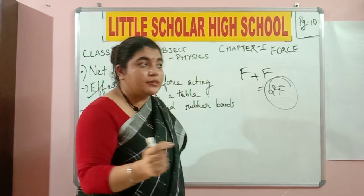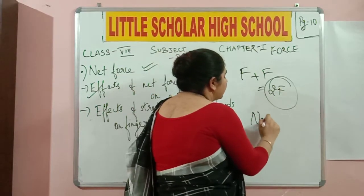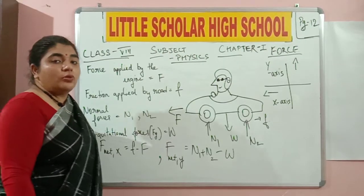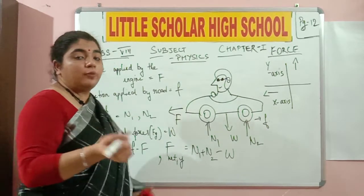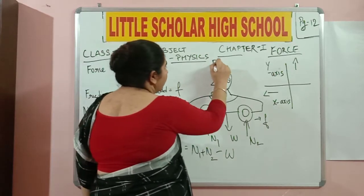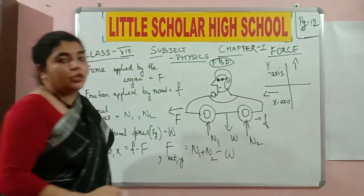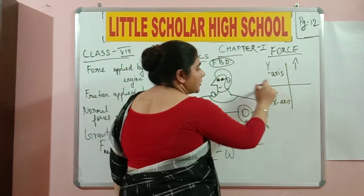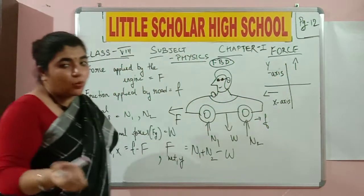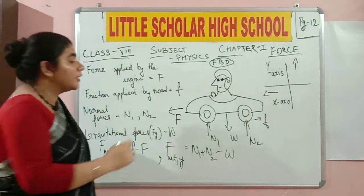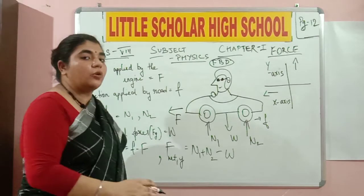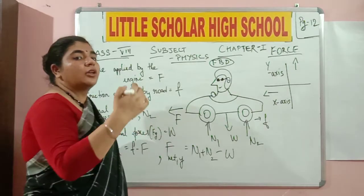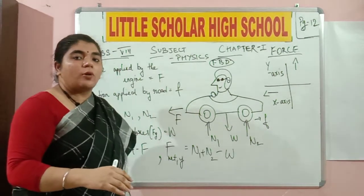The unit of force is Newton. Now we need to learn how to calculate net force with the help of a free body diagram, abbreviated as FBD. You can check this on page number 12. Compare the diagram with the X and Y axes — the horizontal portion is the X axis and the vertical one is the Y axis. We need to learn what forces are acting on the particular free body.